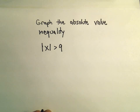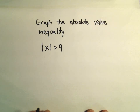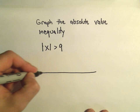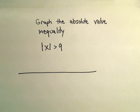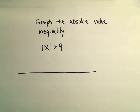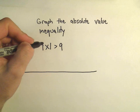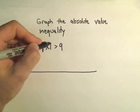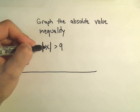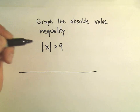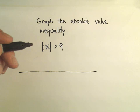One thing you can mechanically learn is how to break these apart, but let's think about intuitively what numbers we can take the absolute value of so that we get something greater than 9. Let's make the number line that goes with that. Remember, the absolute value simply turns something positive if it's not already positive.